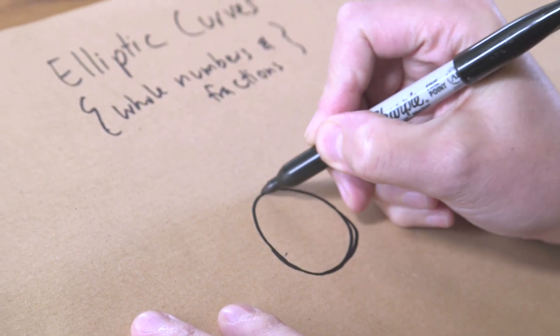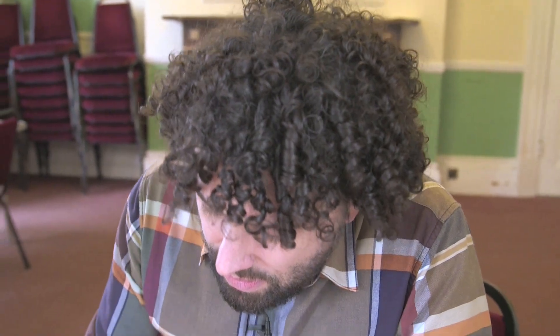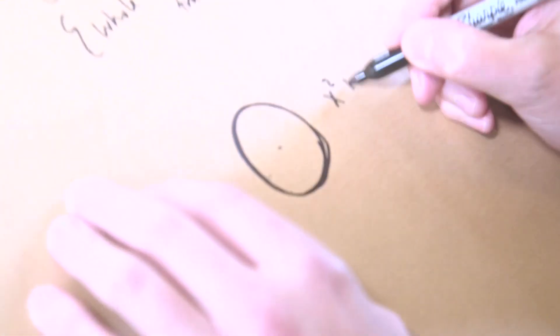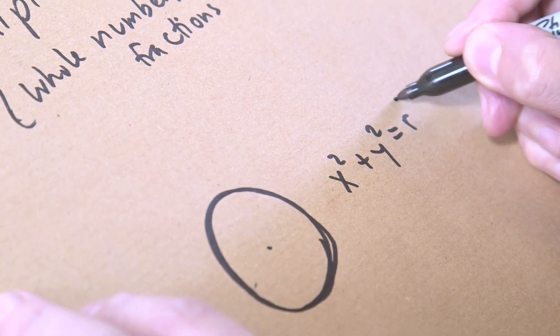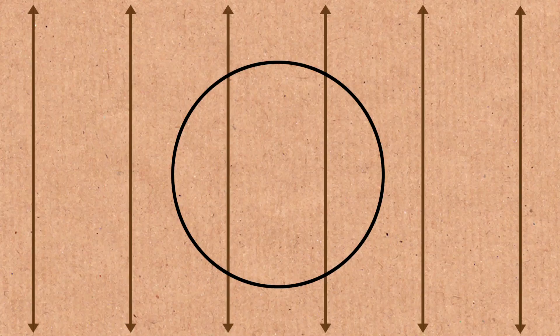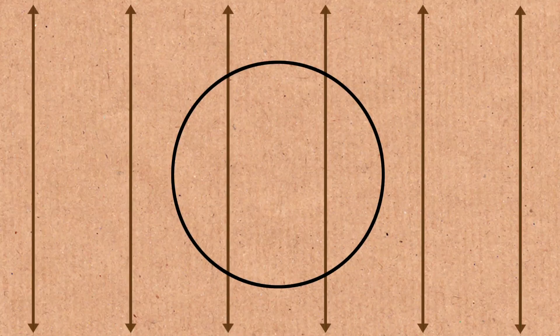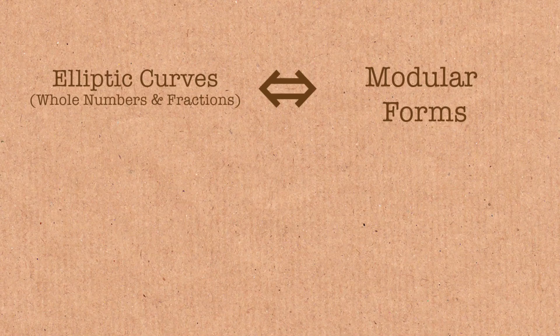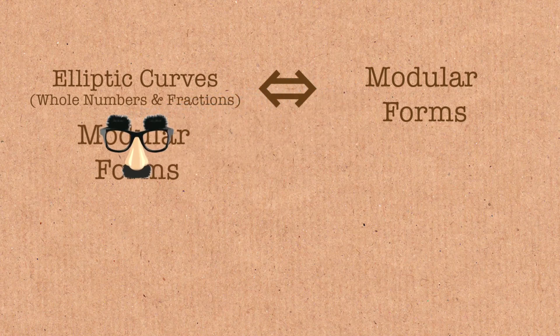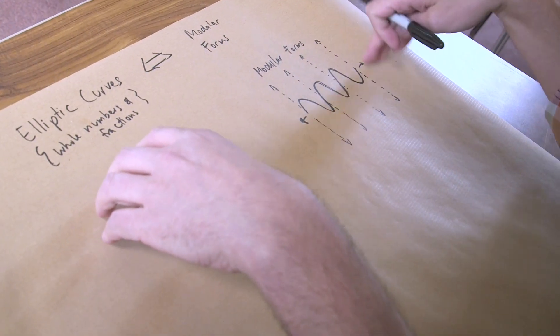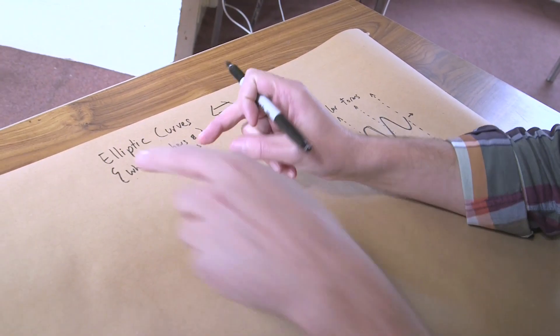Not all functions are like that. A circle has an equation, except it doesn't have translational symmetry - it just exists in one section. So what this relationship is saying is that elliptic curves - whole numbers and fractions - are modular forms in disguise. It's actually saying that you can fit a modular form into an elliptic curve; you can fit a translational symmetry equation into the equation of the circle. This is magical stuff.